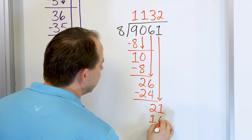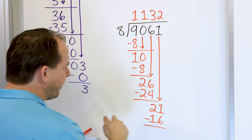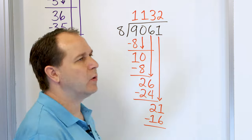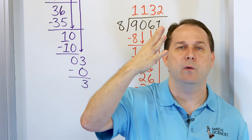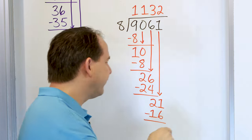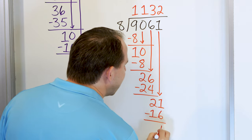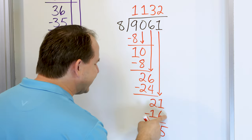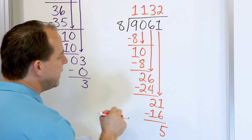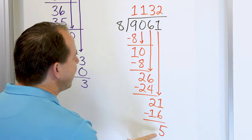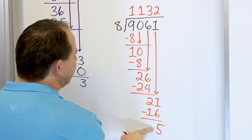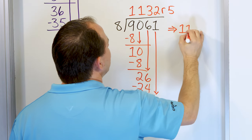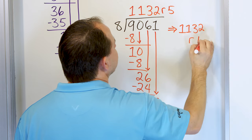8 times 2 is 16, 8 times 3 is 24 — too big. So go back to 8 times 2, multiply to get 16, and subtract. Start at 16 and count up to 21: 17, 18, 19, 20, 21 — there are five numbers between these two, so the difference is 5. After you subtract, grab the next digit — there is no next digit. Check the remainder is less than 8, and it is, so you have a remainder of 5. The answer is 1,132 remainder 5.